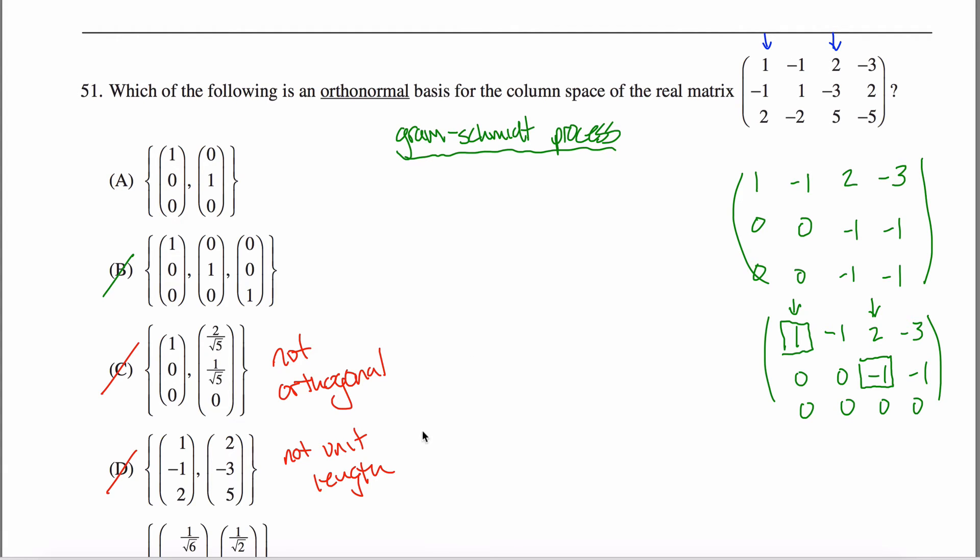I don't want to take this first and third column here. What I want to do is go back to my original matrix and take the first and third column of that. So those are the two I'm going to be looking at. The notation that is fairly standard, I think, is to call that V1 and V2. So V1 is this column vector one, negative one, and two. And V2 is this column vector two, negative three, five.